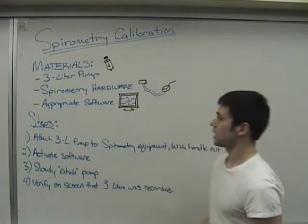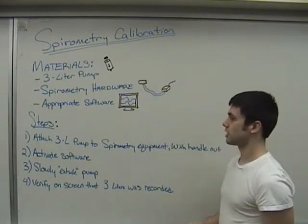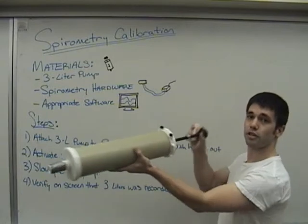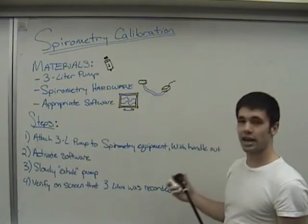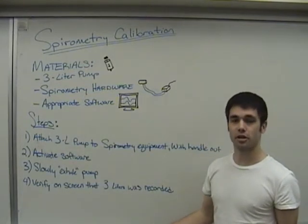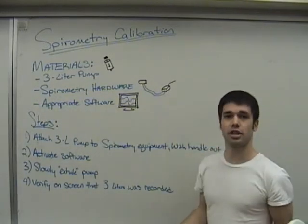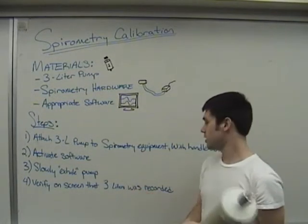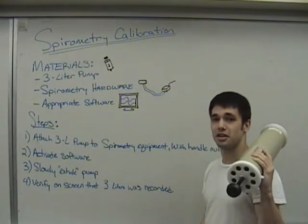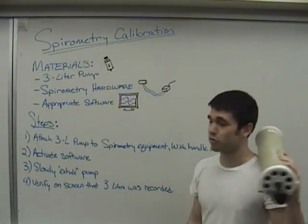The steps that we'll take in calibrating our spirometry is we'll attach the three-liter pump to the spirometry equipment with the handle out. Next, we'll activate the software and ensure that it is running properly. And we'll slowly exhale the pump and verify that the screen is showing three liters. If this is the case, then your spirometry equipment is calibrated correctly.